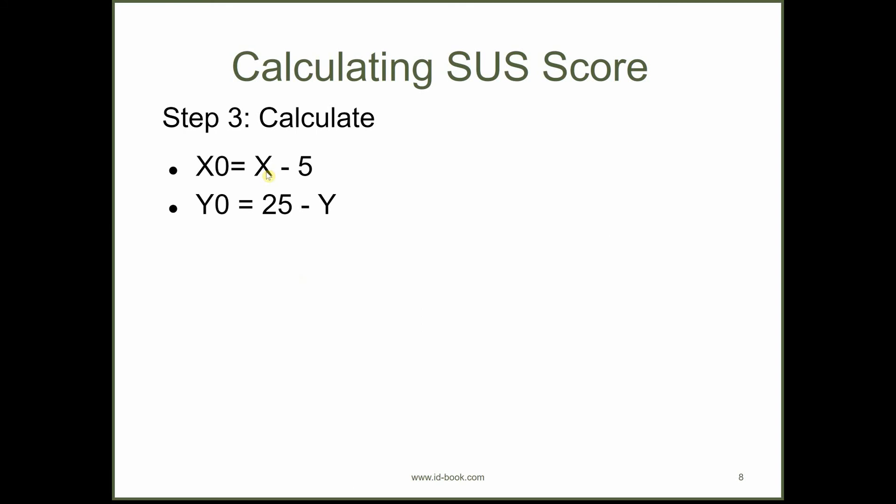Next step is that you subtract the sum of the points of all the odd number questions, and you subtract 5 from it. And then you subtract from 25 the sum of all the even number points. So that should give you two more numbers, x0 and y0.